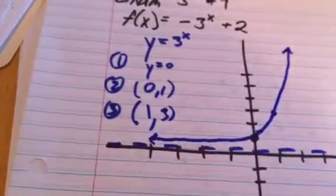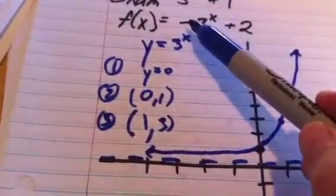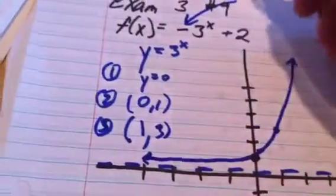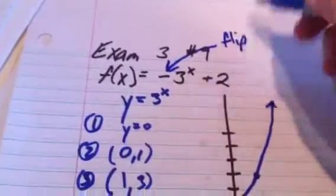And then what I want to do is shift this thing. So the negative is actually going to flip it over the y-axis.